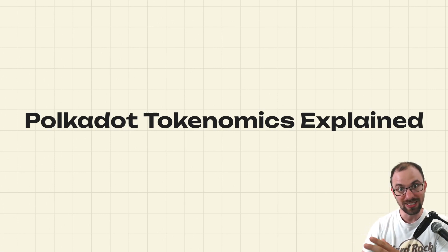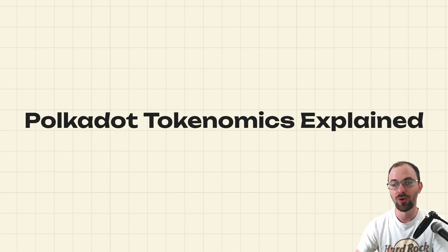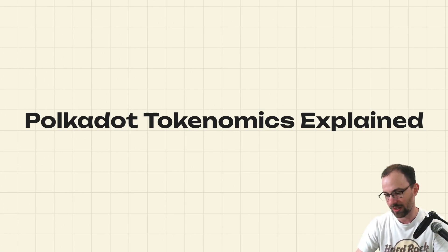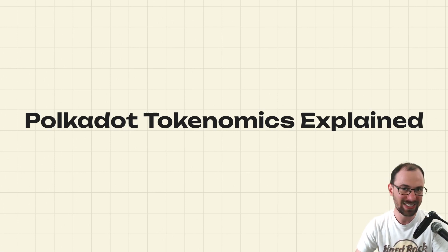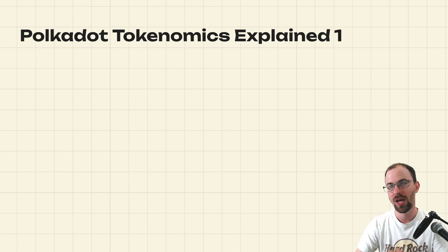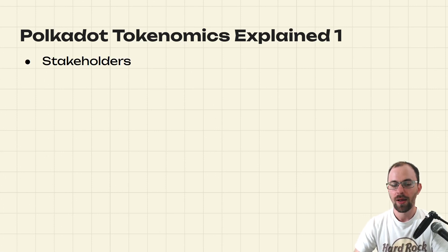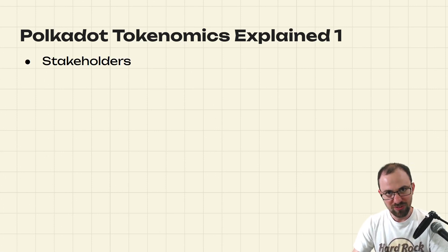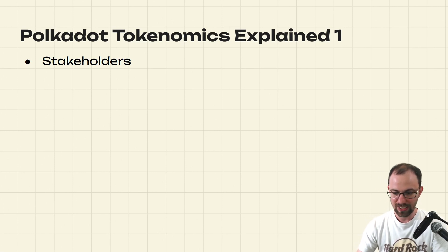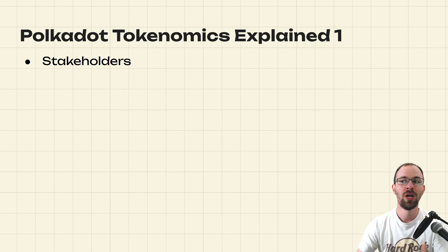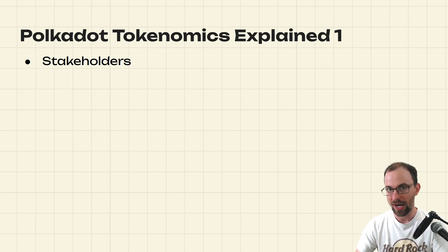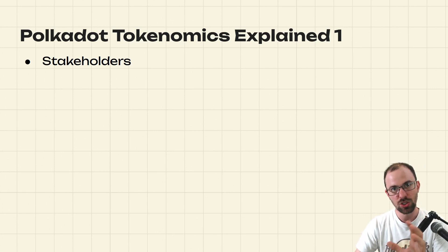Before we go into the trends, I want to cover how Polkadot tokenomics work right now. I think I haven't seen any source that summarizes this well. Any tokenomics system consists of different stakeholders working and coordinating together to create value. The value of the Polkadot network is secure block space to power unstoppable, secure, trustless applications. Let's look at the stakeholders.